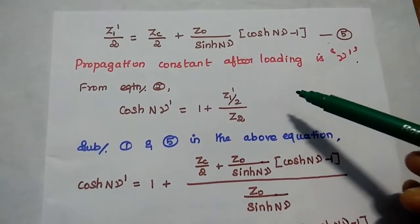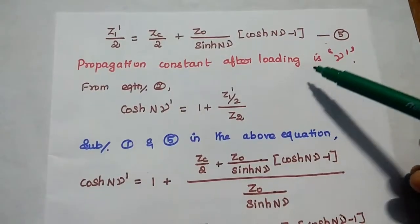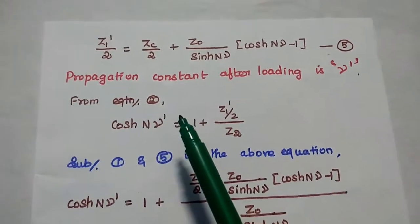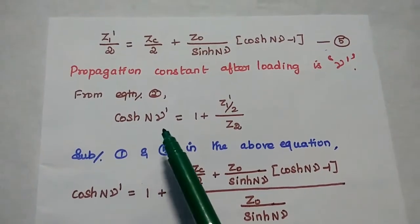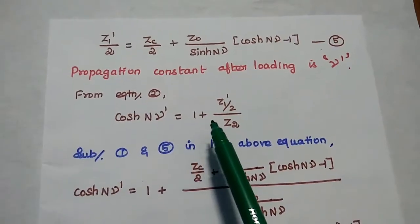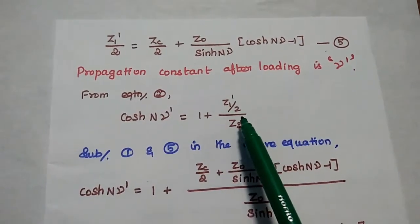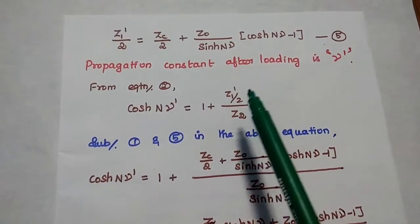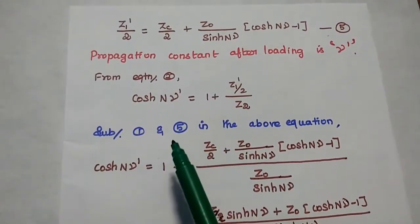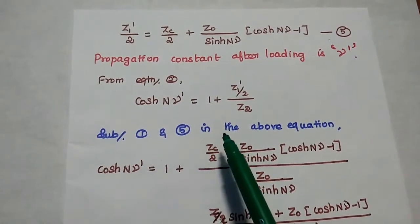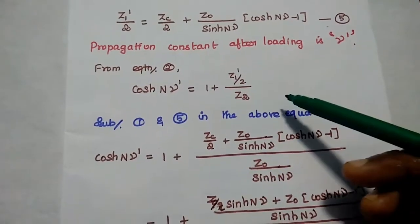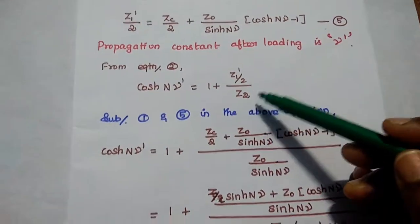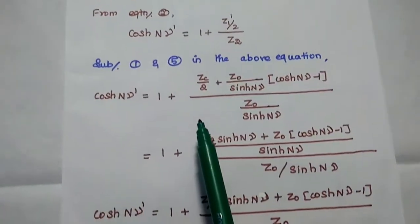Next, we are going to analyze the propagation constant after loading, denoted as γ dash. From the second equation, we can write: cosh(Nγ dash) is equal to 1 plus Z1 dash by 2 divided by Z2, where Z1 is replaced with Z1 dash after loading. Next, we substitute the first and fifth equations into the above equation, replacing Z1 dash by 2 with the fifth equation and Z2 with the first equation.